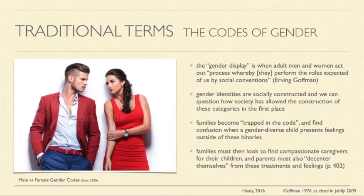Moving to traditional terms — they talked a little about this in the film: the gender codes. Gender display is when adult men and women act out the process whereby they perform the roles expected of us by social conventions, as said by Irving Goffman. Gender identities are socially constructed and we can question how society has allowed that construction. Some families become trapped in this code and find it confusing when a gender diverse child presents feelings outside of the binaries, and must then look to find compassionate caregivers while also decentering themselves from the treatments and their feelings.